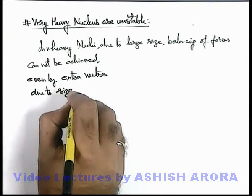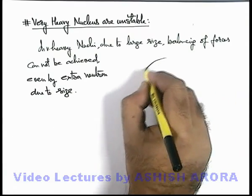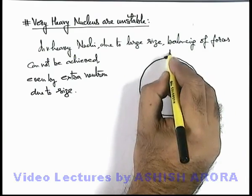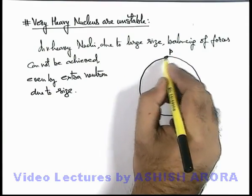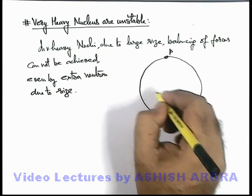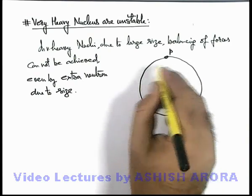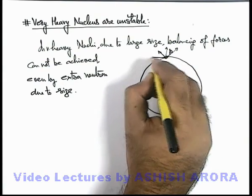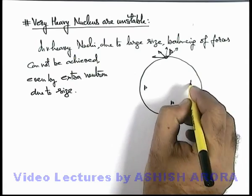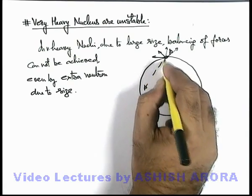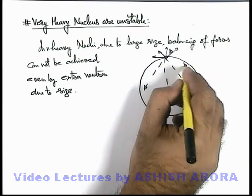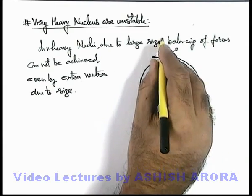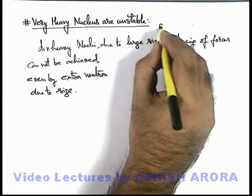In the previous section we already discussed that if the size of the nucleus is large, and if on the surface we consider a proton, it experiences a repulsive force due to every proton which is there within the nucleus. So at every point where a proton is located in the nucleus, these protons will repel this proton because of electrostatic force, and it experiences an outward electrostatic repulsion.